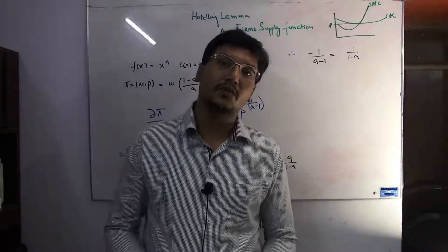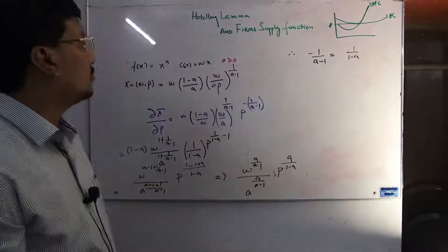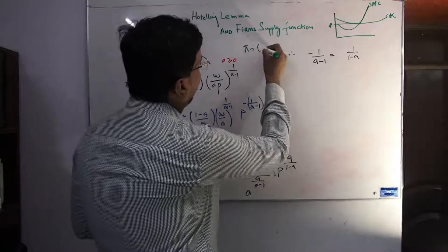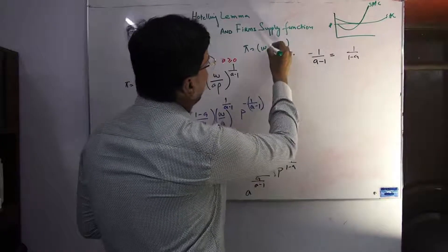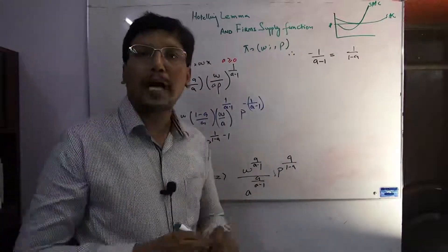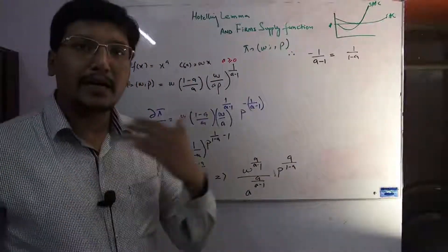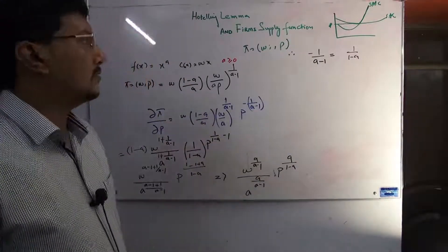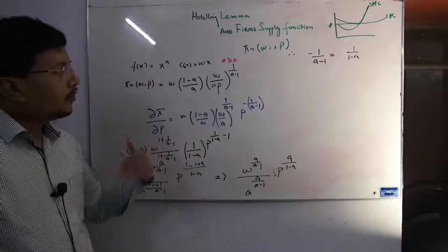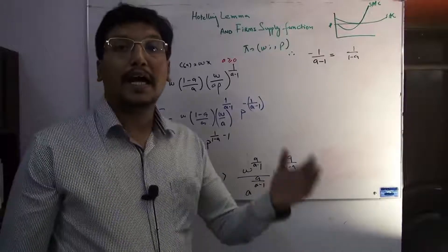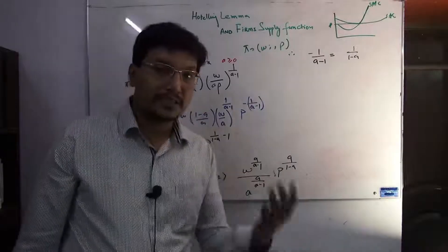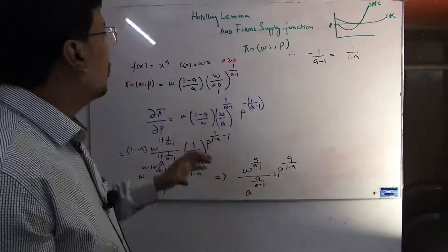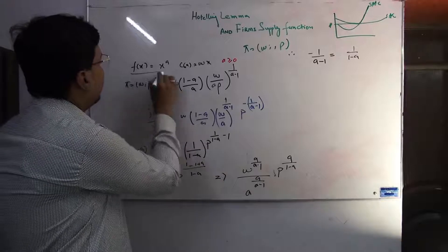You know that the profit is basically the function of input prices and output prices. Input prices w, labor, capital - everything you can use as an input and plug their prices. For your easiness and understanding, we already established the profit function in previous lectures. Here we write what is the profit function.